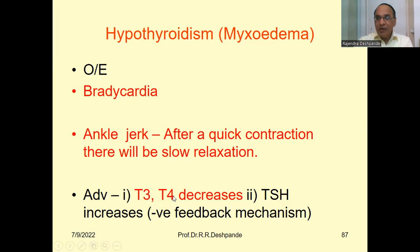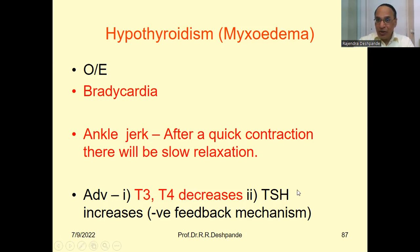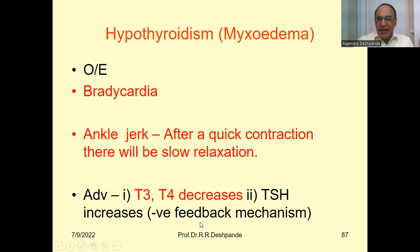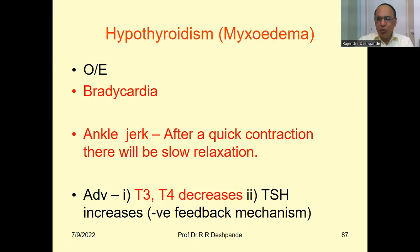Advise the patient to go to a pathology lab for a blood test. T3 and T4 will be decreased, but TSH will be increased — this is inversely proportional and is called the negative feedback mechanism in physiology, by which hormones in the endocrine system are controlled.